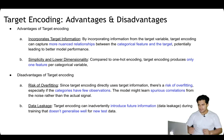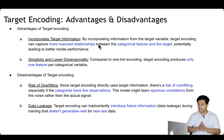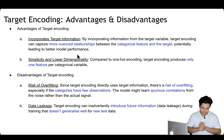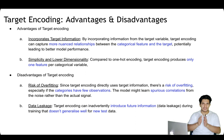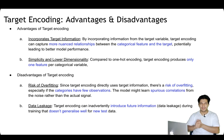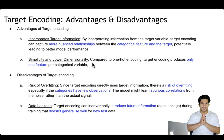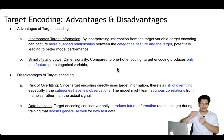The advantages of target encoding: it incorporates target information — by using the target variable, it can capture more nuanced relationships between a categorical feature and the target, potentially leading to better model performance. For example, if in the training dataset highly qualified people are also in high positions — and high position is the target variable — that relationship is captured in the encoding and helps the model learn better. Another advantage is simplicity and lower dimensionality: one-hot encoding would produce n columns, but target encoding produces just one output column — the average target value.